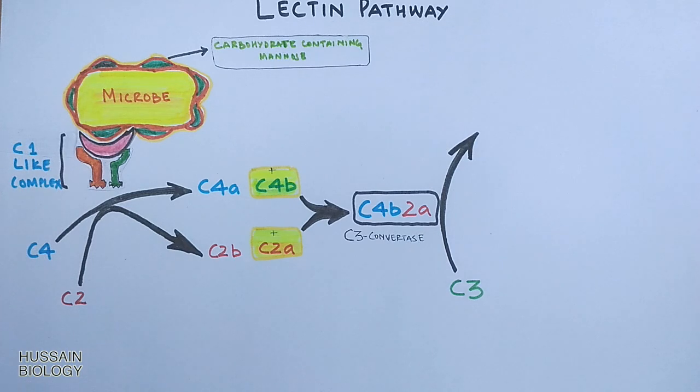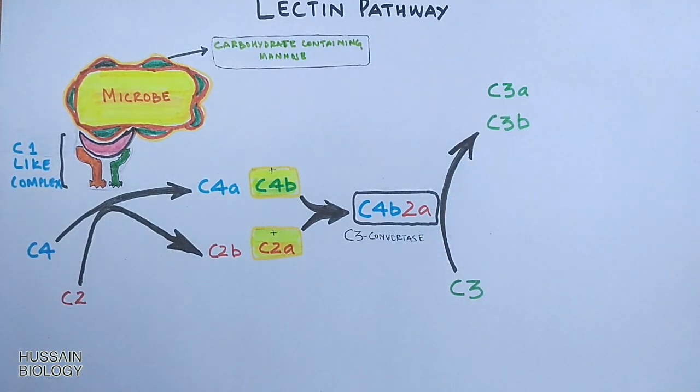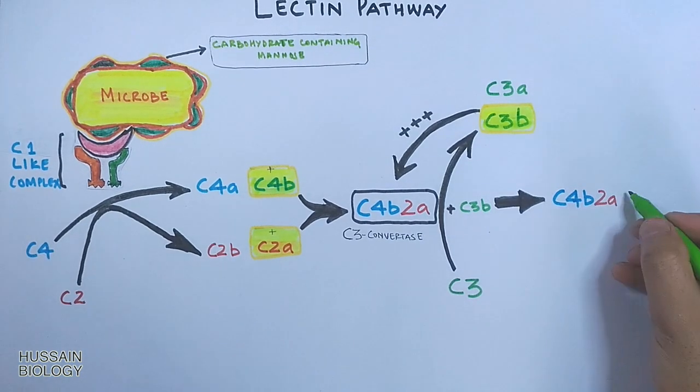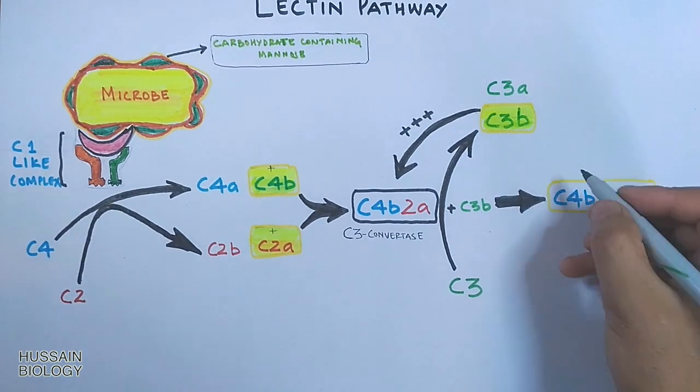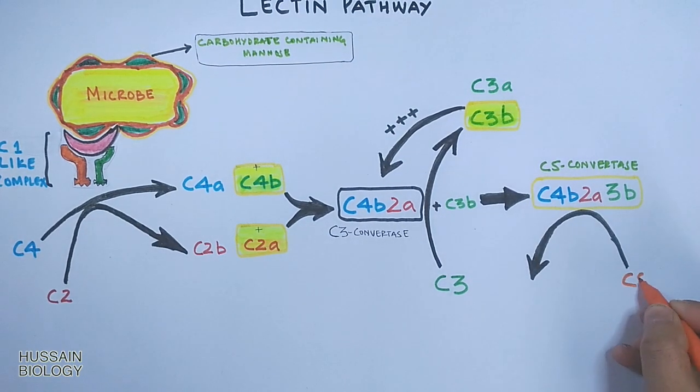The C3 convertase acts on C3 and converts it into C3a and C3b. C3b, being the larger and active fragment, binds with the C3 convertase enzyme to form C4b2a3b, which is the C5 convertase.